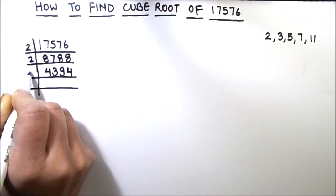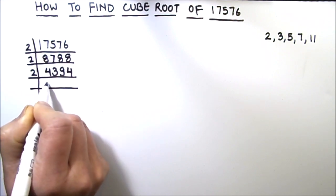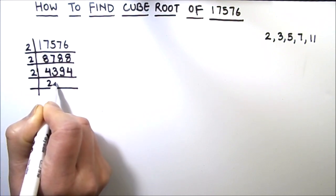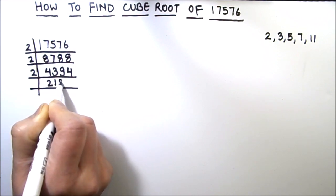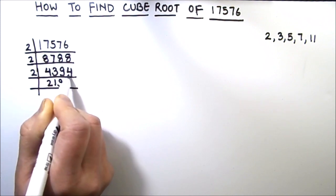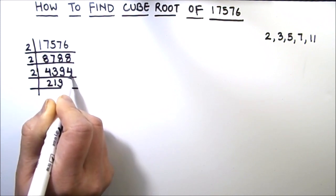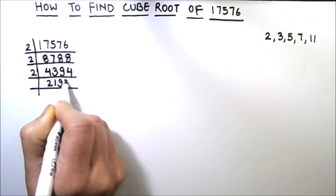Again we can divide this number by 2, 2 times 4, 2 times 4 is 4, 2 times 1 is 2, 1 is carried over. So this becomes 14, 2 times 7 is 14.